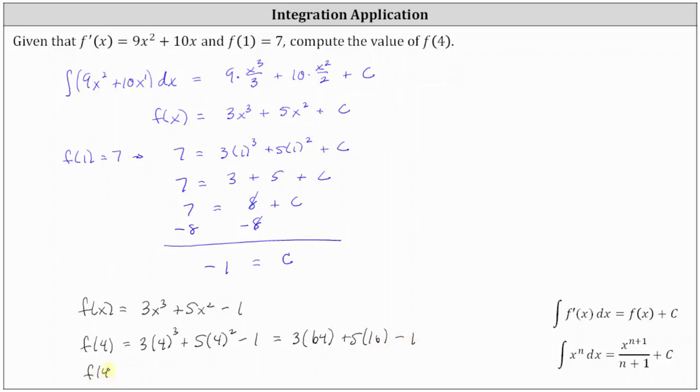Which gives us f(4) = 192 + 80 - 1, which equals 271.